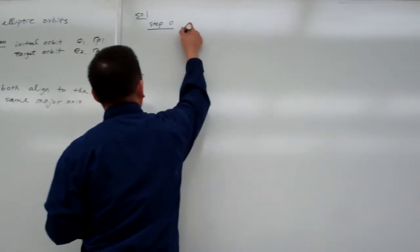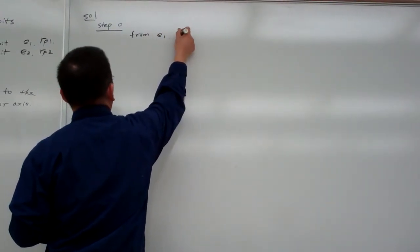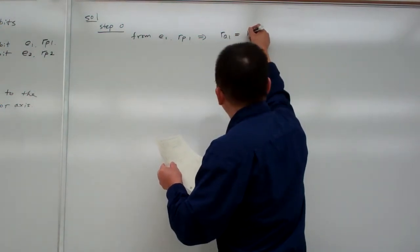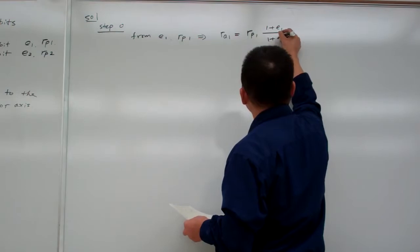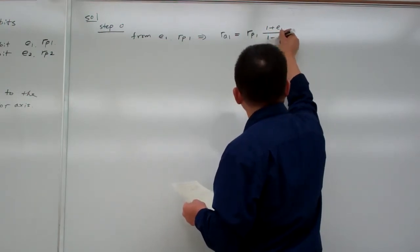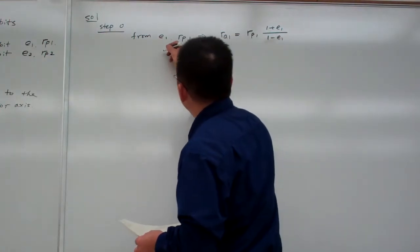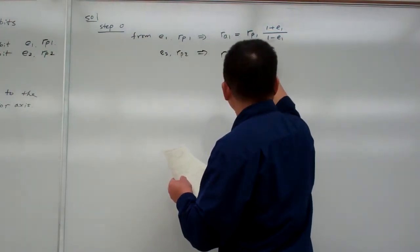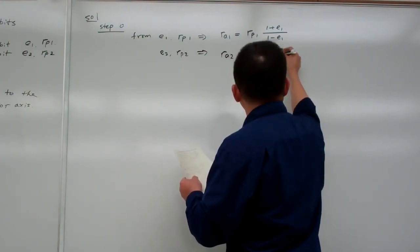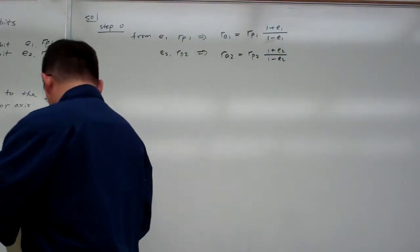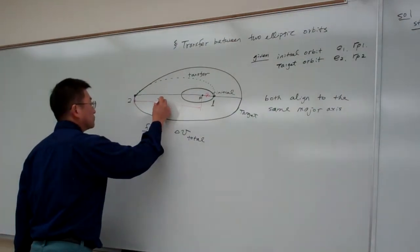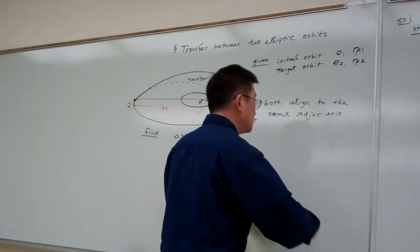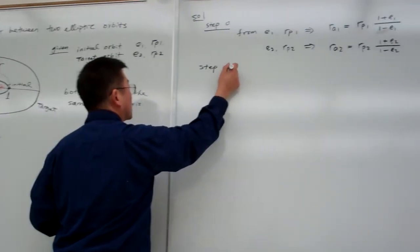Step zero: from E1 and RP1, we can use the tables to get RA1. That is: RA1 equals RP1 times (1 + E1) / (1 - E1). And from E2 and RP2, we can get RA2 equal to RP2 times (1 + E2) / (1 - E2). Now, with those values, we can begin to calculate the velocity.